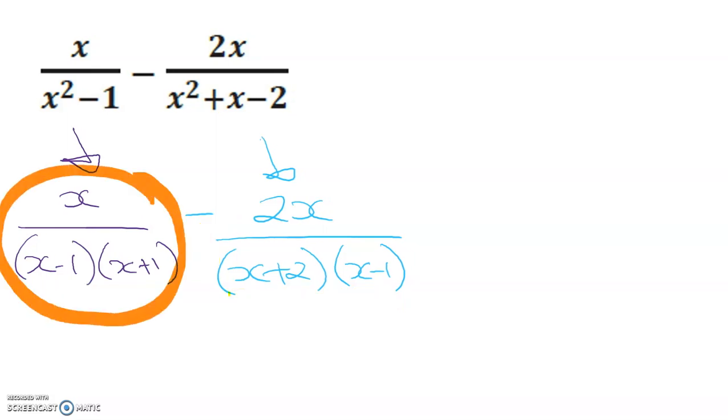On the left hand side here, the denominator does not have an (x+2) in it. So I'm going to multiply this side by (x+2).